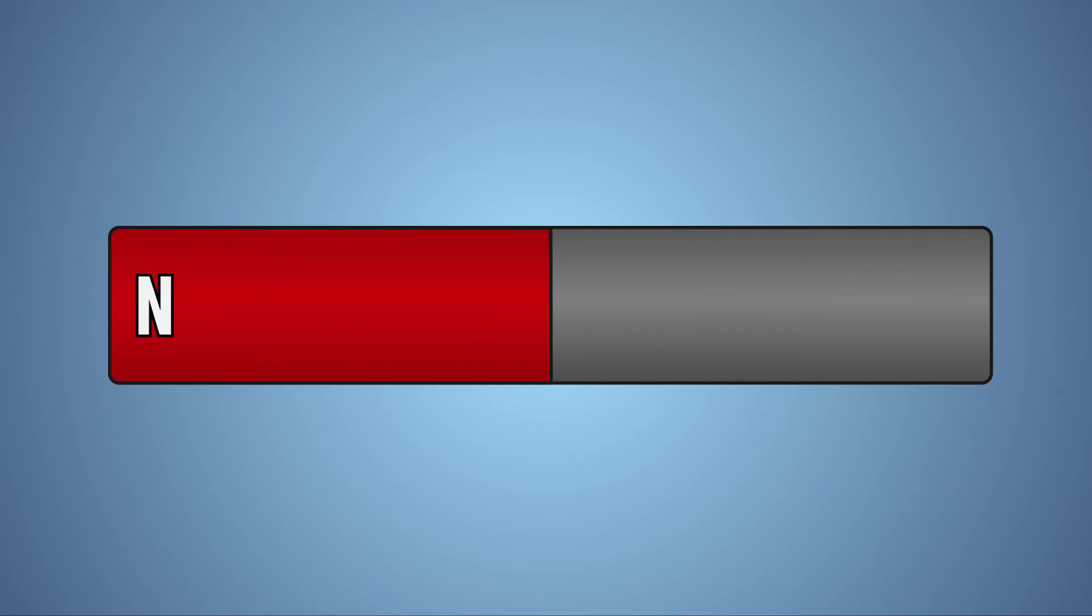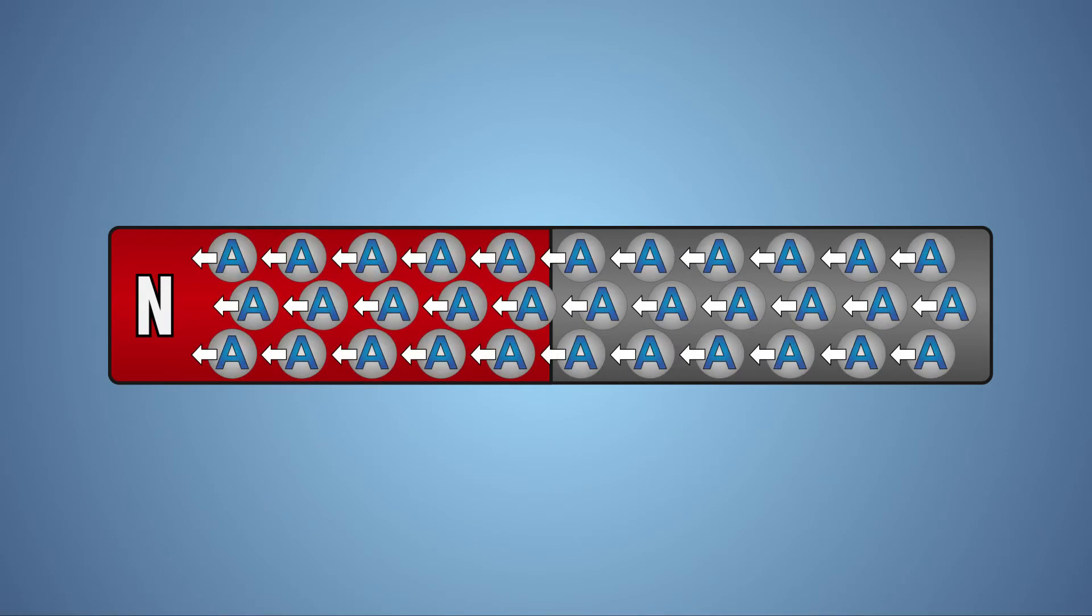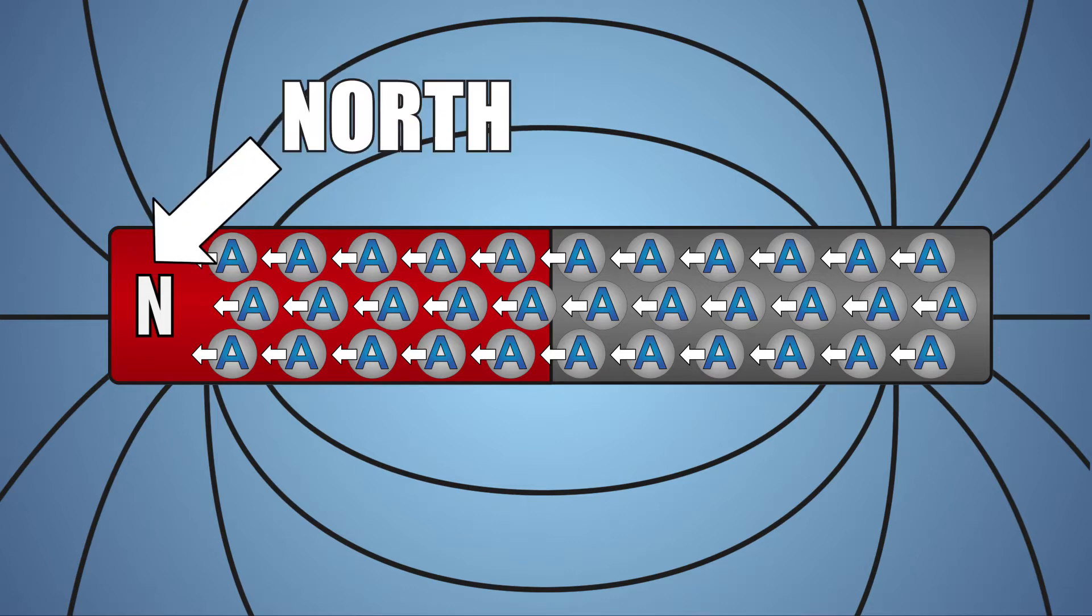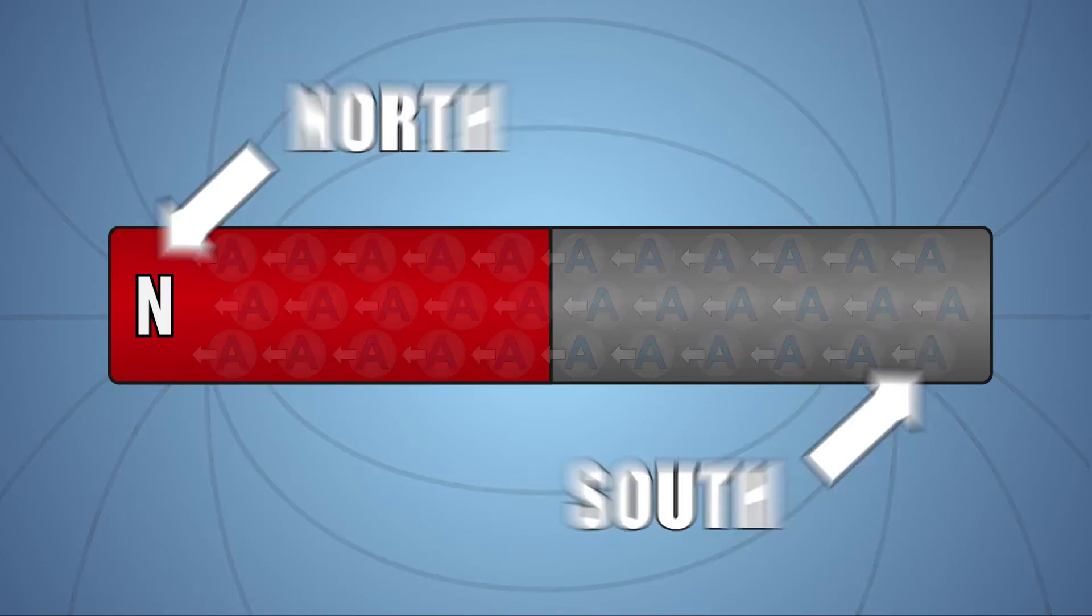Let's look at this experiment a little closer. A magnet, like the one we use in this experiment, is created by permanently aligning all of its atoms in the same direction. When all the atoms are aligned, a magnetic field is generated, giving the magnet two poles, a north and a south.